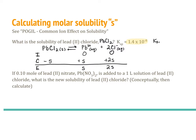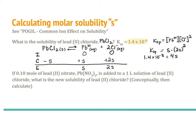The Ksp expression is equal to the concentration of lead times the concentration of chloride squared, because the coefficient of 2 becomes an exponent in the K expression. So I am going to plug in concentrations in terms of S, the molar solubility. We have S times (2S)², because 2S comes from the stoichiometry and it must also be squared. So Ksp equals S times (2S)², and plugging in 1.4 times 10 to the negative 8th, combining like terms gives 4S³.